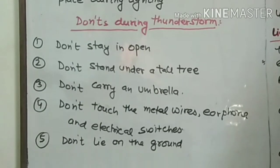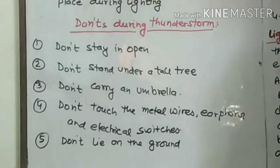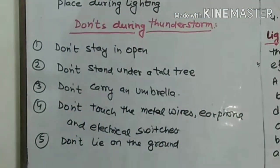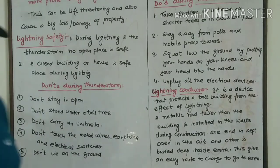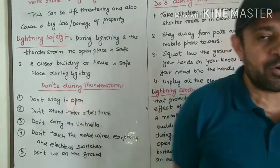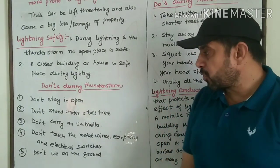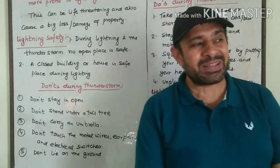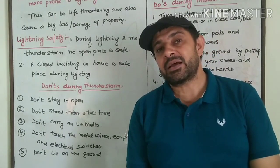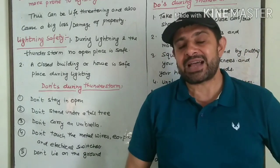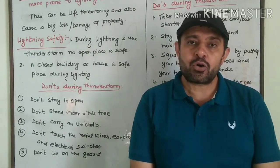Now let us see some do's and don'ts during a thunderstorm. First, the don'ts. Don't stay in the open — if you are caught in a thunderstorm, get yourself to a safer place. Number two, don't stand under a tall tree. Tall trees are more prone to lightning strike, just like open ground.